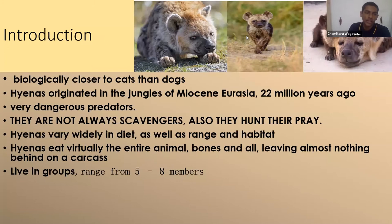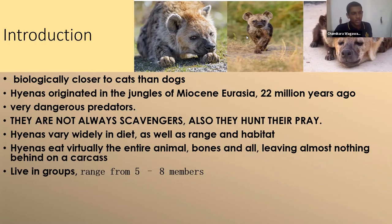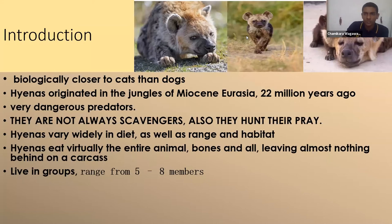There are four types of hyenas, and they vary in diet, habitat, and range. Hyenas eat their prey virtually entirely — the whole animal, bones and all. They normally live in groups consisting of five to eight members, and sometimes this can increase to 20 or 30. If you have any questions, please ask and we will try our best to answer.